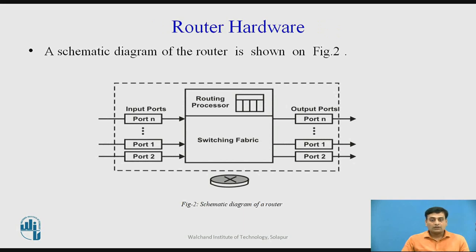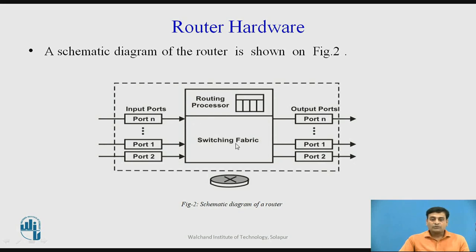Let us look at the router hardware. The figure shows the schematic diagram of a router with its internal blocks. The router has input ports — sometimes referred to as input buffers — as well as output buffers, with N input buffers for N output buffers. It has a routing processor and a switching fabric. Input ports receive packets, output ports transmit packets, the switching fabric connects input ports to the correct output ports, and the routing processor maintains and executes the data directing functions.